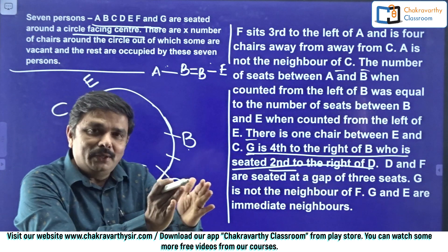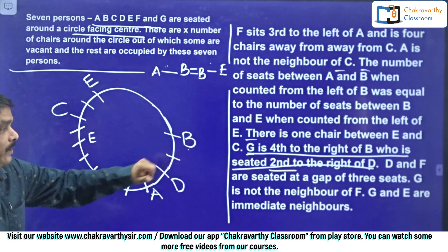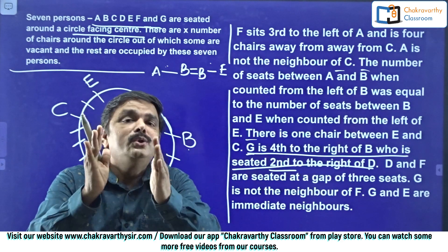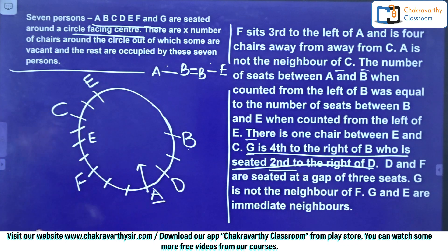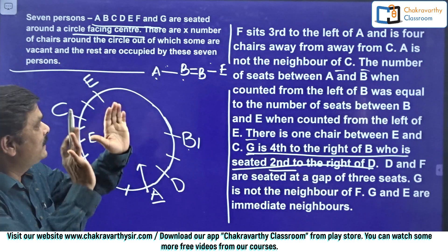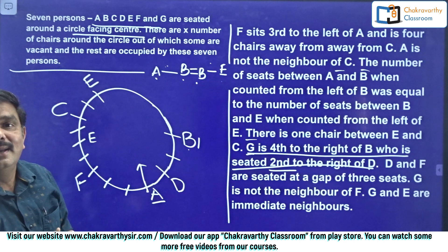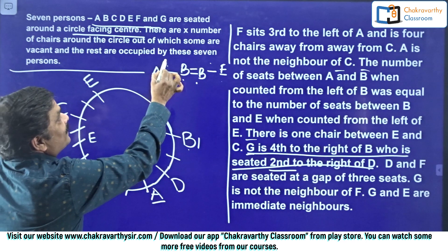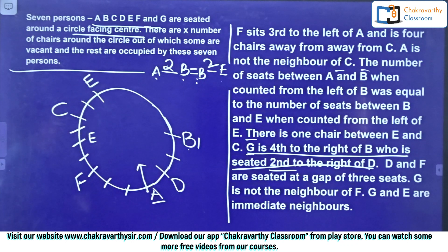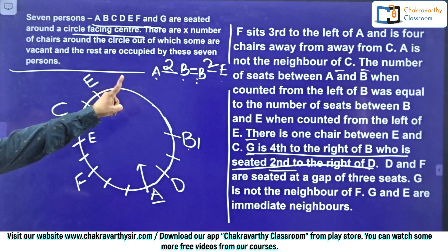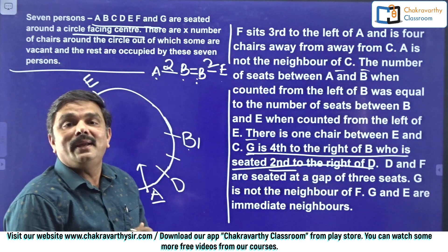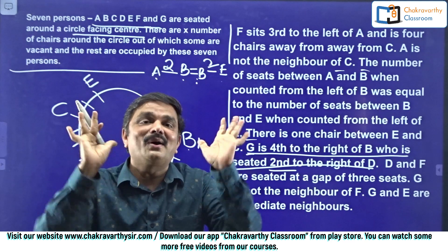Once information is accumulated, try to correlate old information with the new. A's place is confirmed, B's place is confirmed. From the earlier clue, the number of persons between A and B must equal the number between B and E. Between A and B, how many persons are there? Two persons. This is the way to unravel a puzzle. That means between B and E also, two persons must be there.